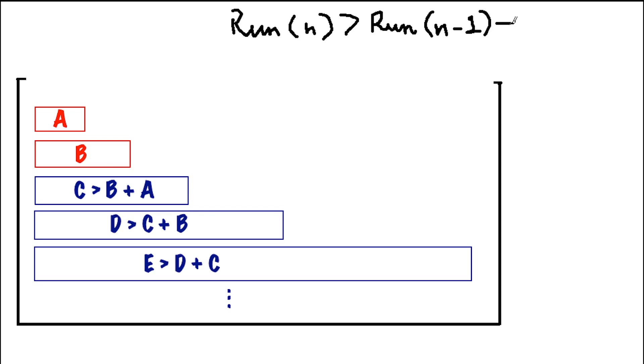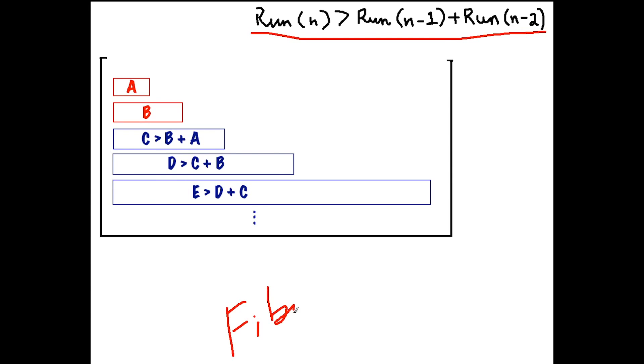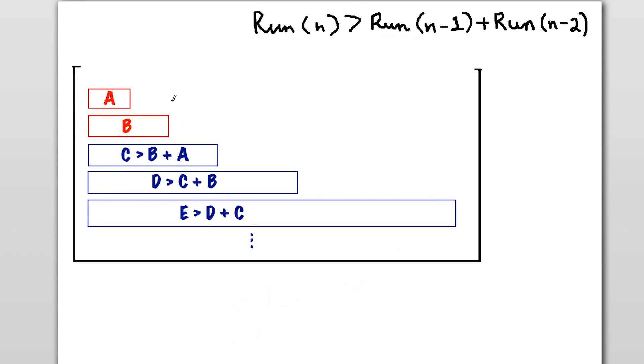This is very interesting because there is a series, a very famous series, which actually has behavior like this. And that is the Fibonacci series. I don't think the Fibonacci series has any relevance to this algorithm, but it's interesting that it pops up out of nowhere in tim sort. The main reason we have this kind of an invariant is because we want to merge the arrays efficiently. And merging two arrays of similar lengths is an efficient operation.